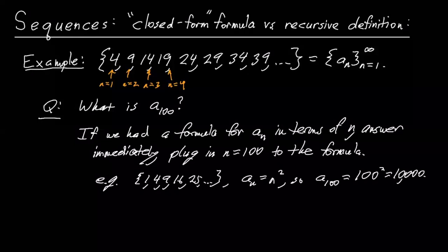So a sub 100 is 100 squared, which happens to be 10,000. Okay, so that's an easy way. So that's, again, if you have a formula like we do here, we have a formula for the nth term, it's just n squared, then you can immediately answer the question.